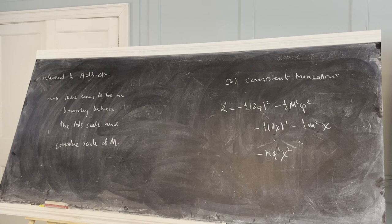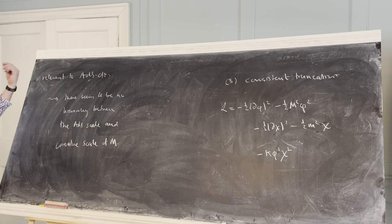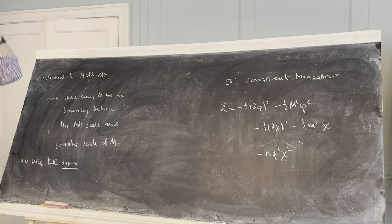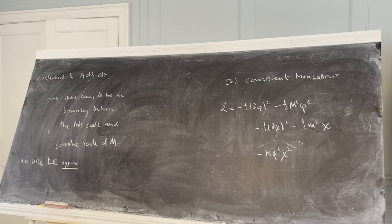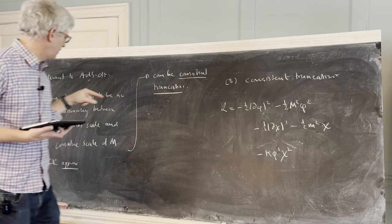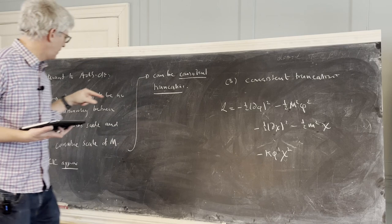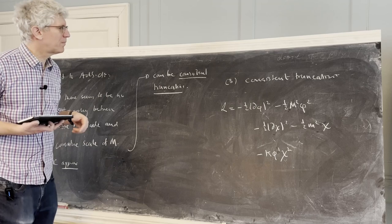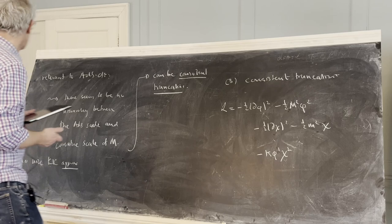There's no hierarchy — we've got ADS times M, and there's two different curvature scales, one for ADS and one for M. In the examples we know, they're the same. So there's no nice Kaluza-Klein approximation — keeping just the lowest-lying states is not justified because the next level will be the same order as the ADS scale. However, there can be consistent truncations. And what that corresponds to is keeping some subset of the operators in the field theory such that, in the large-N limit, their OPE closes amongst themselves.